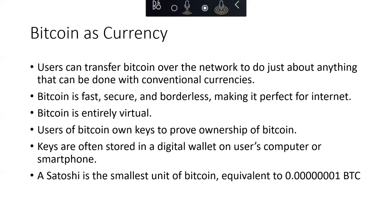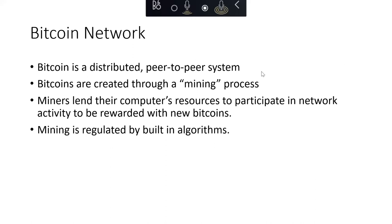Some key properties of Bitcoin: users can transfer Bitcoin over the network to do just about anything they can do with conventional currencies. Bitcoin is fast, secure, and borderless, making it perfect for the Internet. It's entirely virtual, and we use keys to prove ownership. A Satoshi is the smallest unit of Bitcoin — that's seven zeros and then a one for BTC. The Bitcoin network is a distributed peer-to-peer system. Bitcoins are created through a mining process, and miners lend their computing resources to participate in network activity in exchange for being rewarded with new Bitcoins. Mining is regulated by the built-in algorithms.